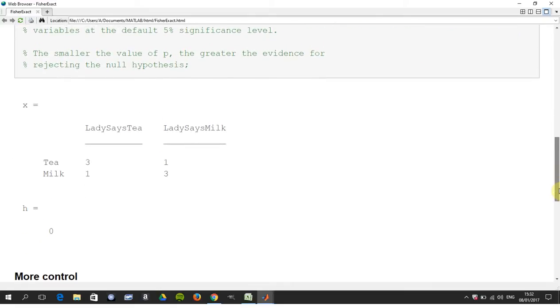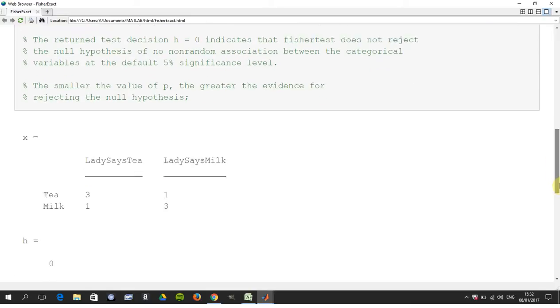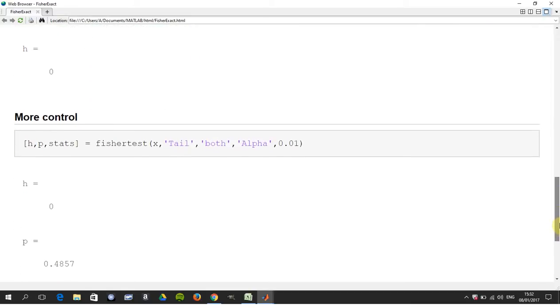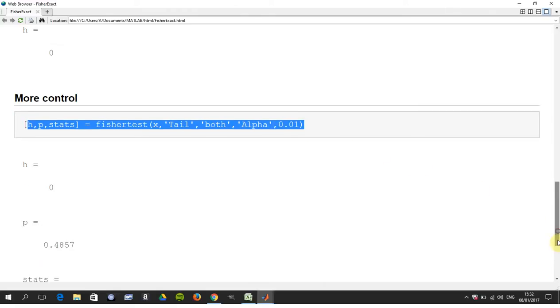Now if you just do the default command like there fishertest x it doesn't tell you what the probability is but if we do more control here. So we have here fishertest x, tailed left, right, left and right tailed, the alpha, the level of significance, and it's one percent.